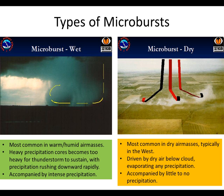Meteorologists have defined two types of microbursts: wet and dry. Wet microbursts, more common east of the Rockies, form in warm and humid climates, while dry microbursts are more common in the western U.S., where air masses are typically drier.